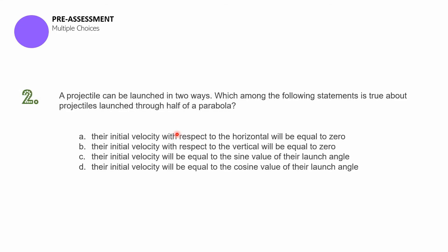Pre-assessment item number two. A projectile can be launched in two ways. Which among the following statements is true about projectiles launched through a half of a parabola? A. Their initial velocity with respect to the horizontal will be equal to zero. B. Their initial velocity with respect to the vertical will be equal to zero. C. Their initial velocity will be equal to the sine value of their launch angle. D. Their initial velocity will be equal to the cosine value of their launch angle.